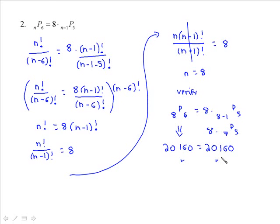Now I'll turn to word problems with restrictions. If all letters of the word DIPLOMA are used, how many 7-letter arrangements beginning with 3 vowels are there? I really recommend using the fundamental counting principle when working these out — sketch out the slots to see what's going on. DIPLOMA has exactly 3 vowels, so we begin with 3 vowels to start it off.